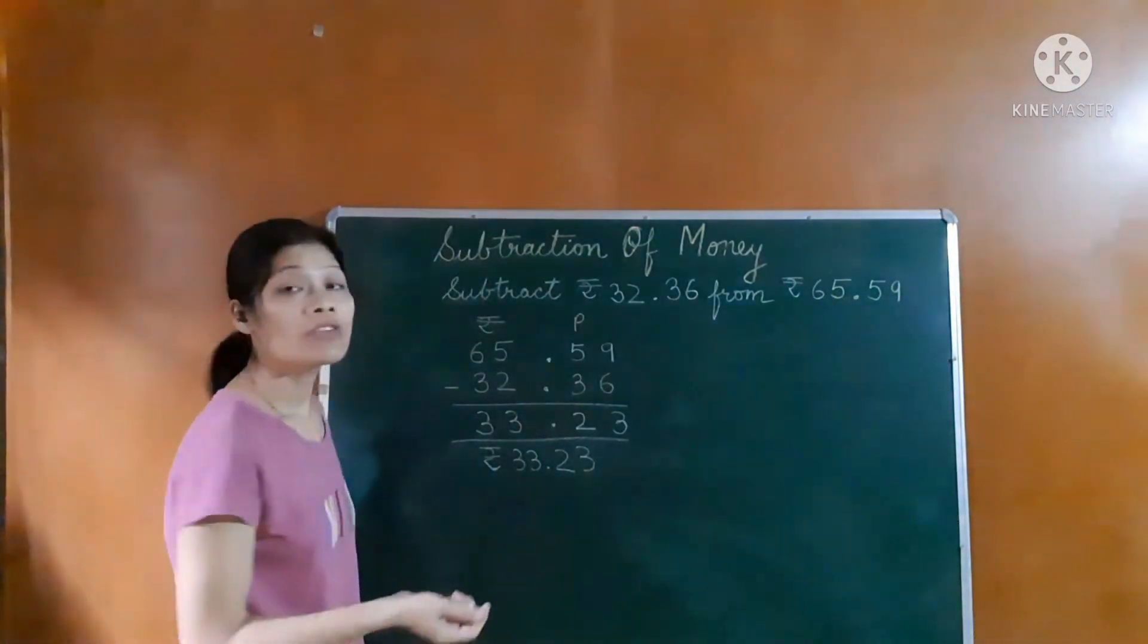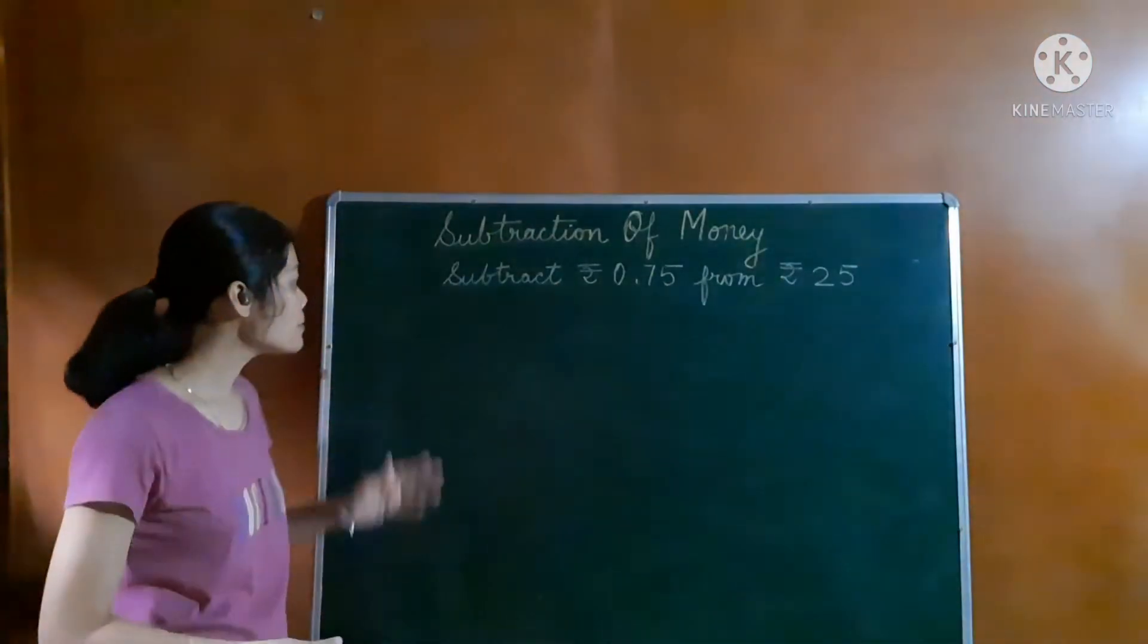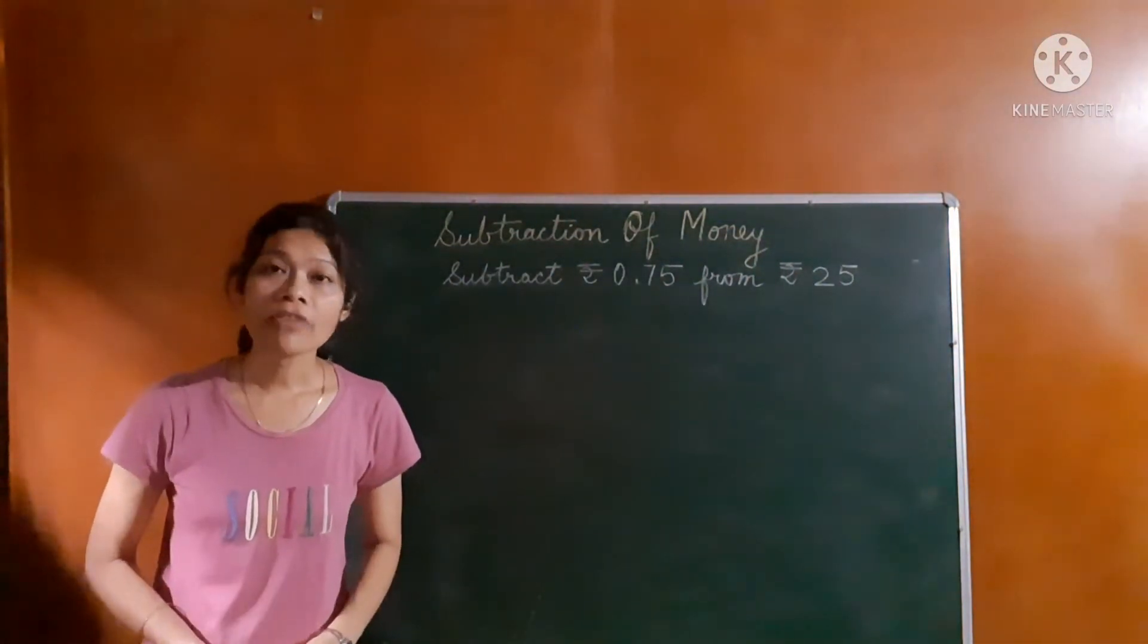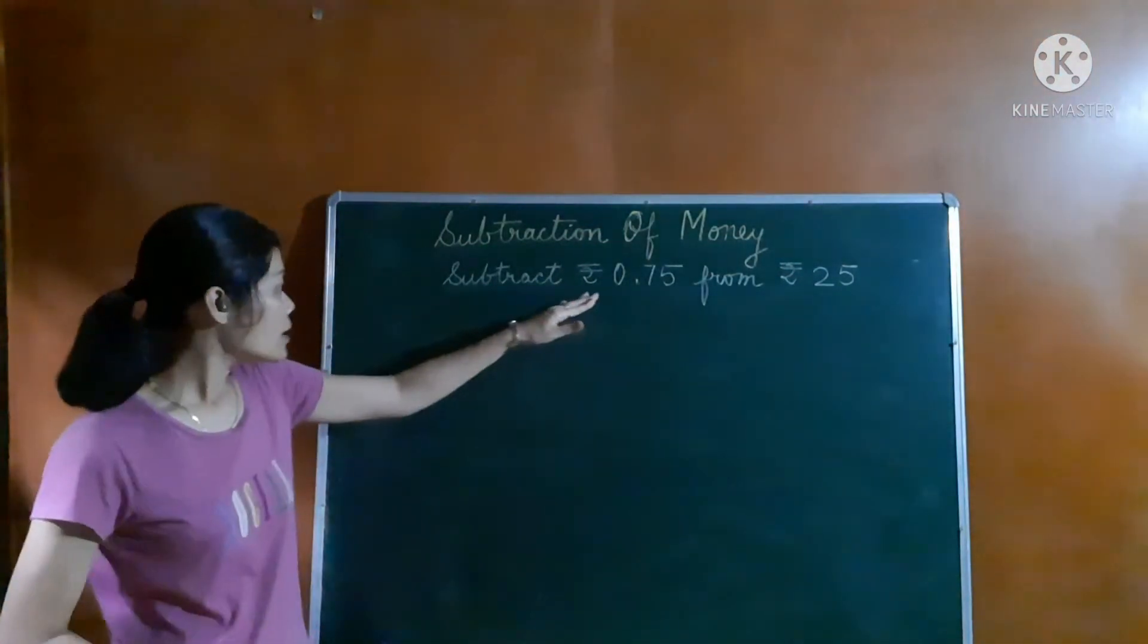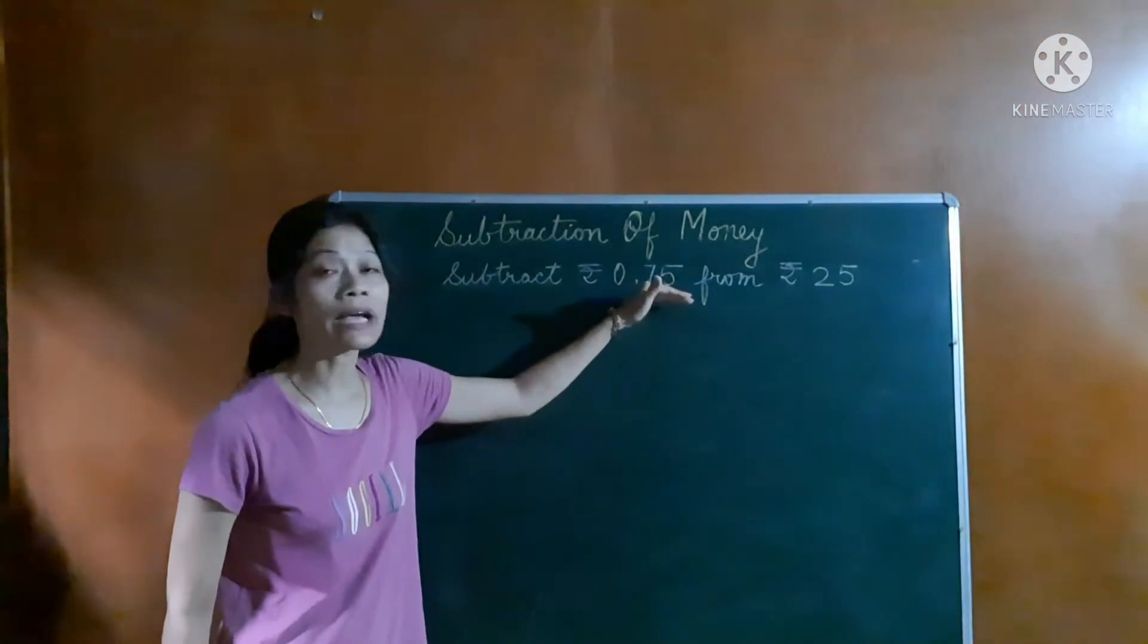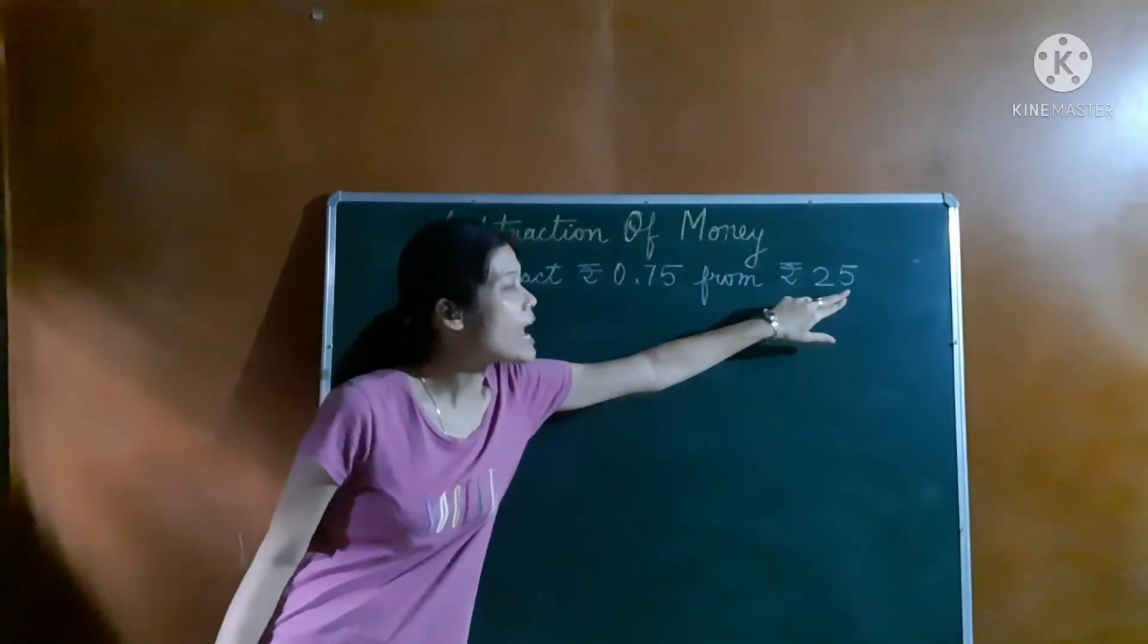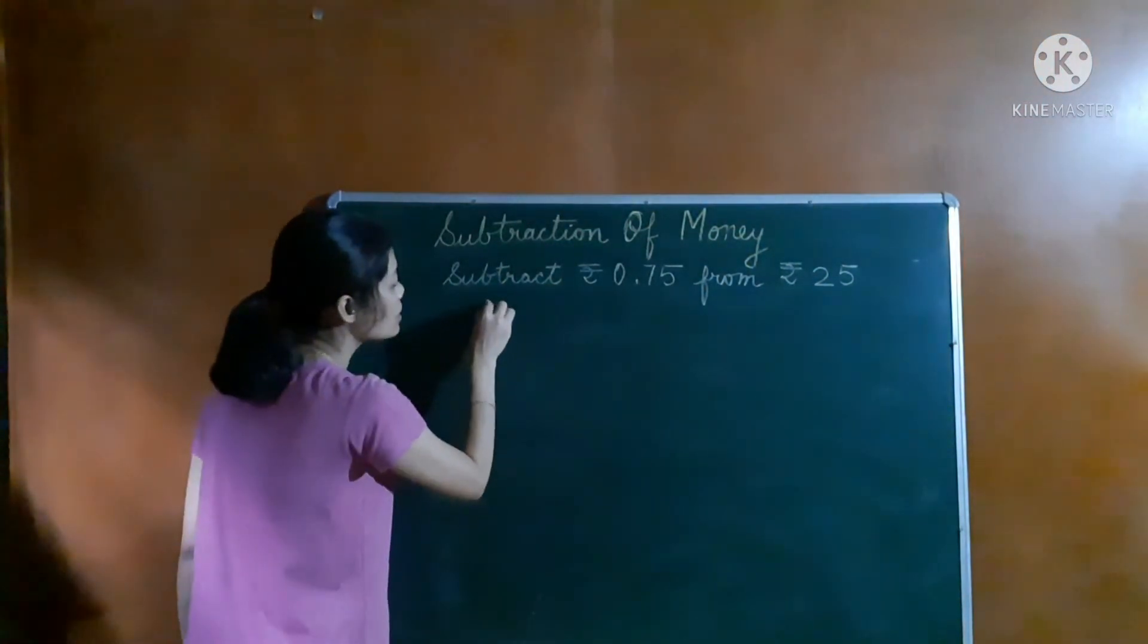Now we will take another example. The question here is subtract 0 rupees, 75 paise from 25 rupees. Here we can see the rupees mentioned is 0 and only paise is mentioned. And in a similar way here, amount of rupees is given and no paise is mentioned. So how we will write this in columns.